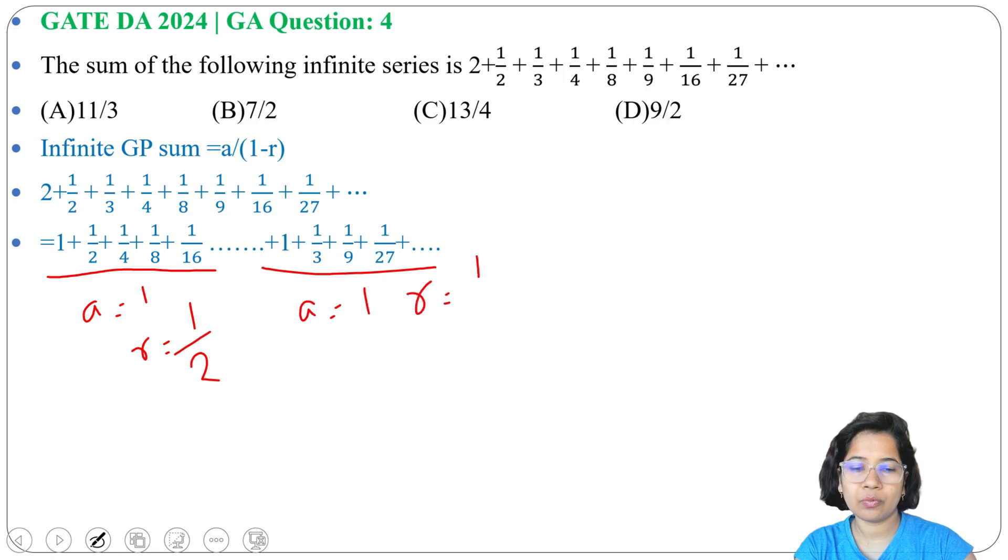Now using this formula, it will be A is 1, so 1 divided by 1 minus 1 by 2, plus 1 divided by 1 minus 1 by 3.